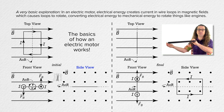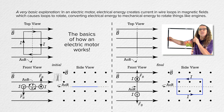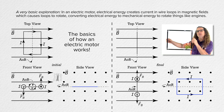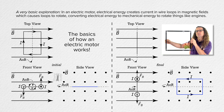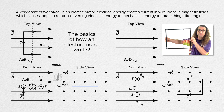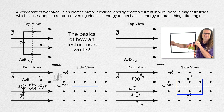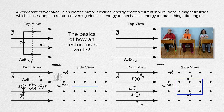Looking at the side view, realize the current carrying loop goes from this position to this position while in a magnetic field. Can anyone tell me why I am pointing that out specifically? In the side view, the current carrying loop goes from this position to this position while in a magnetic field. The magnetic flux through the loop increases from the initial to the final point.